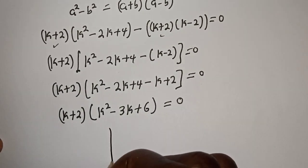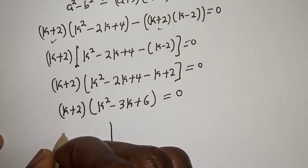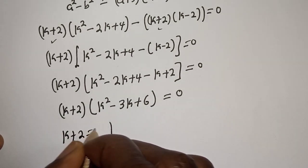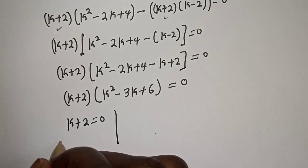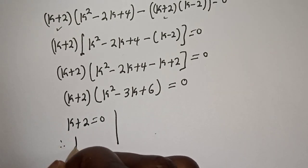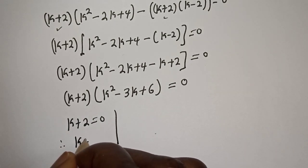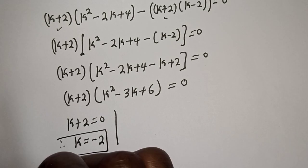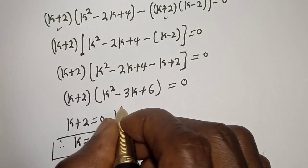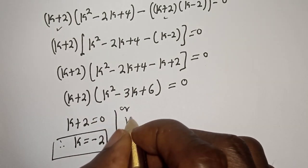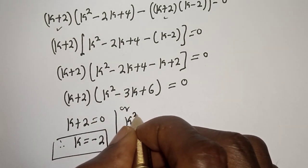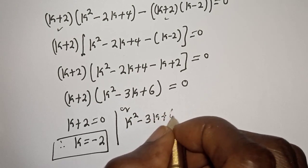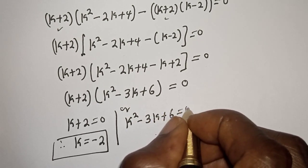There are two cases. The first case: k plus 2 is equal to zero, therefore k is equal to minus 2. Or the second case: k squared minus 3k plus 6 is equal to zero.